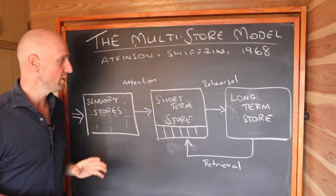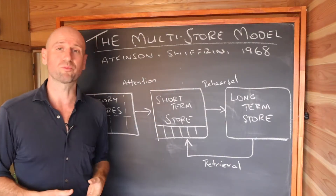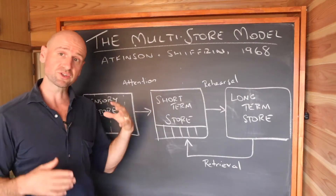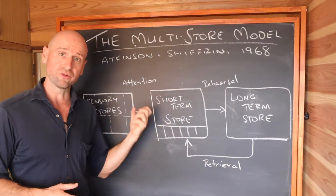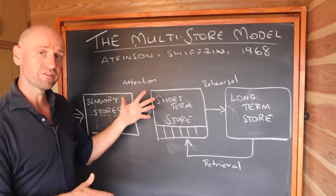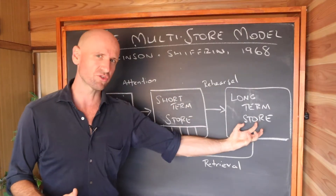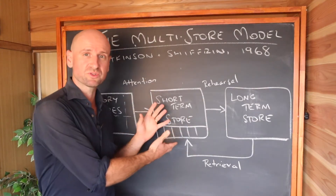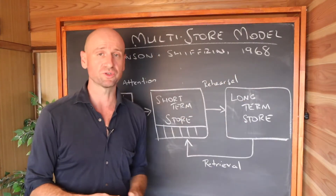So a quick recap of the multi-store model: there are three stores, and information travels between them via controlled processes. We pay attention to what comes into our sensory store, which transfers it to our short-term store. If we rehearse it, it transfers to long-term, and we can bring it back through retrieval. Also, according to the model, there are a few ways we can forget — information might decay from our short-term store if we don't rehearse it enough, or through displacement as new items kick old ones out, and through interference and decay in our long-term store as well.